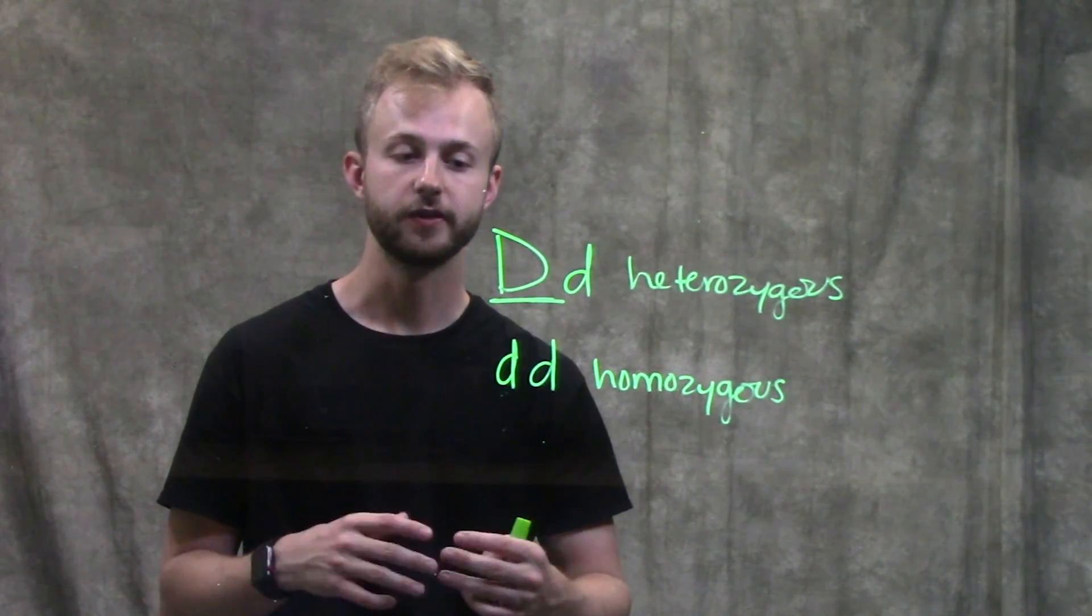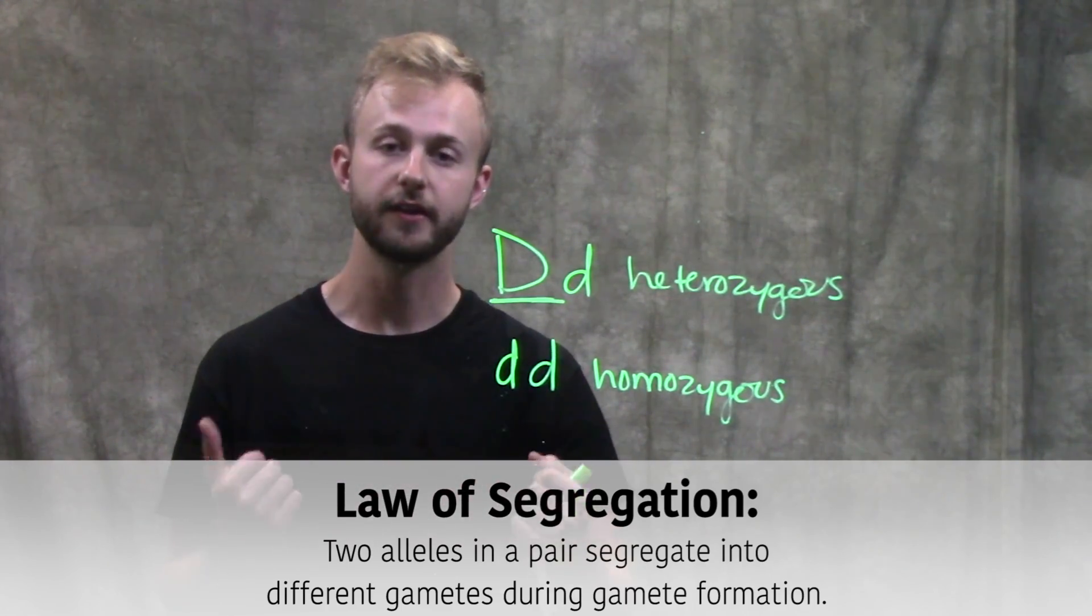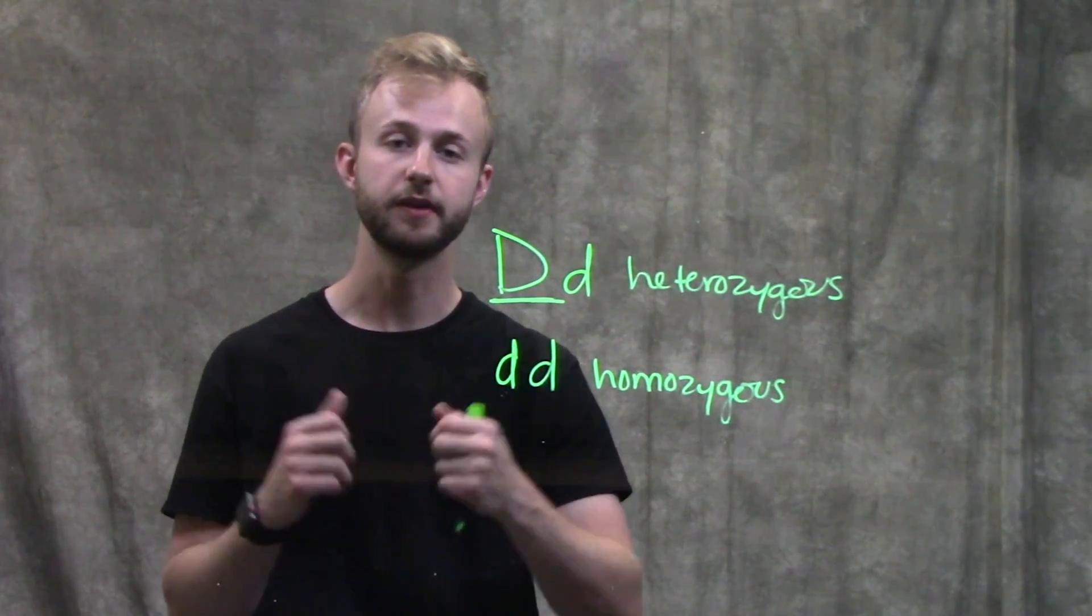The law of segregation says that two alleles for a particular trait are separated during gamete formation and end up in different gametes.